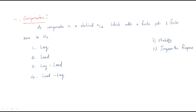Here we will deeply discuss compensators. A compensator is an electrical network which adds a finite pole or finite zero to a system. By adding a finite pole or finite zero, it changes the characteristics of the system. The different types of compensators are: (1) lag compensator, (2) lead compensator, (3) lag-lead compensator, and (4) lead-lag compensator.